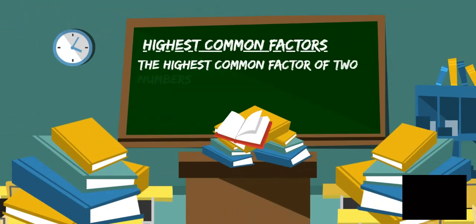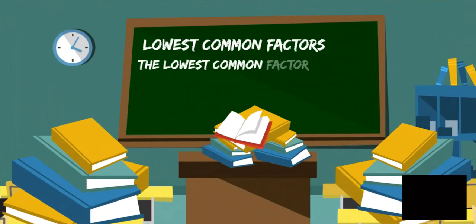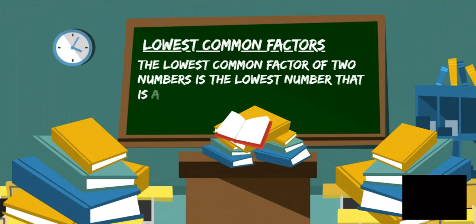The highest common factor of two numbers is the highest number that is a factor of both numbers. The lowest common factor of two numbers is the lowest number that is a multiple of both numbers.